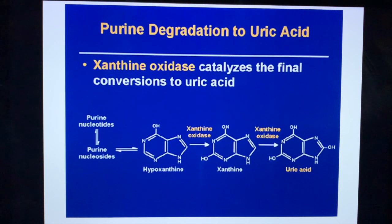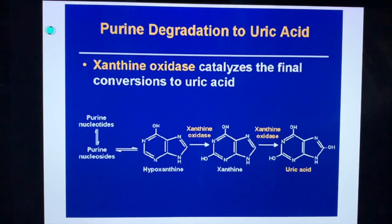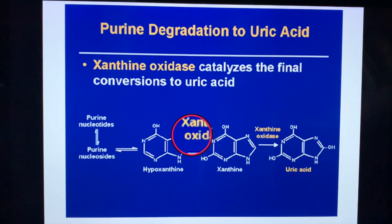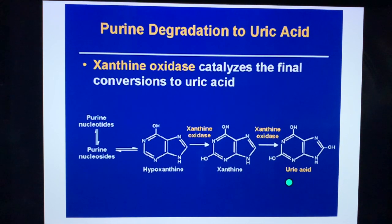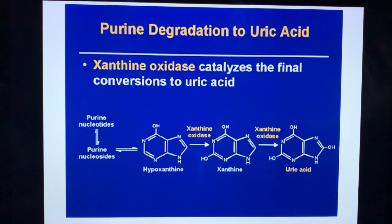Continuing with purine degradation to uric acid: xanthine oxidase catalyzes the final conversions to uric acid. Purine nucleotides and nucleosides fast-forward to become hypoxanthine, which is converted to xanthine by xanthine oxidase, then further converted to uric acid — again by xanthine oxidase. Therefore, xanthine oxidase is the rate-limiting enzyme for purine metabolism. When uric acid is elevated — hyperuricemia — you present clinically with gout.